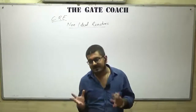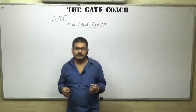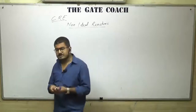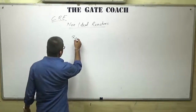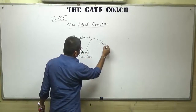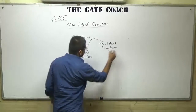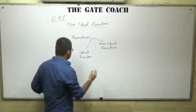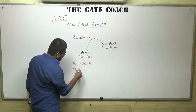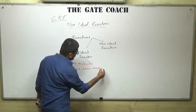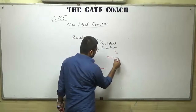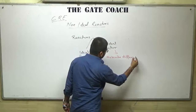The first question is: what is a non-ideal reactor? A reactor is any vessel or equipment in which a reaction takes place successfully under some specific conditions. We can classify reactors into two categories: ideal reactors and non-ideal reactors. In simple terms, ideal reactors are those where all molecules have the same residence time, and non-ideal reactors are those where molecules have different residence times.